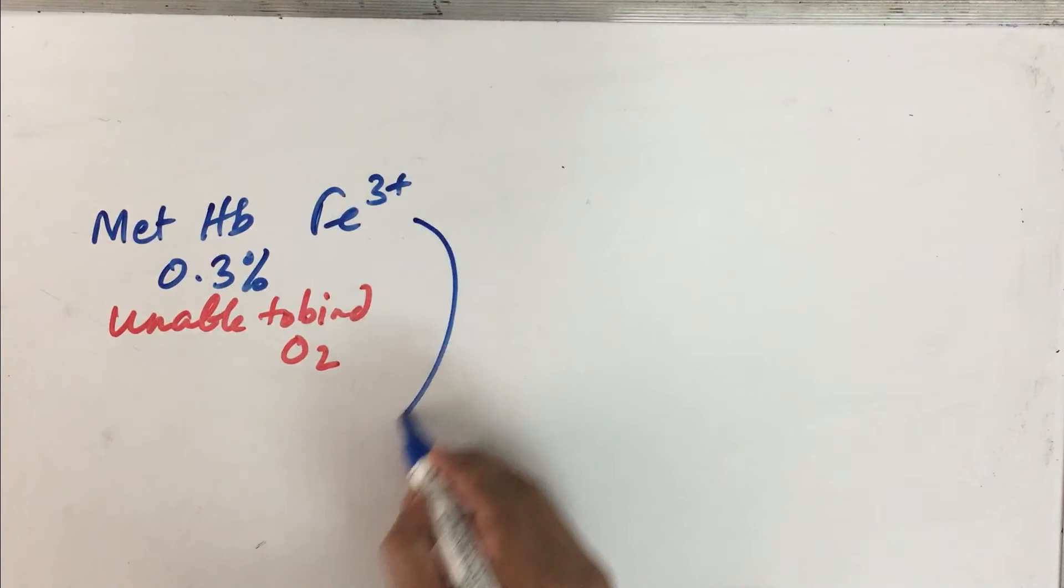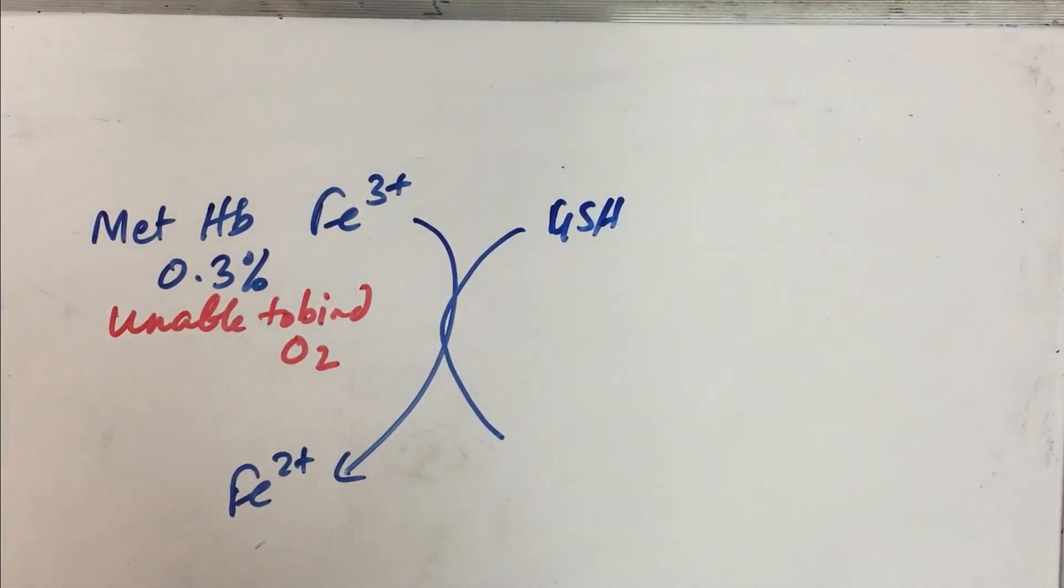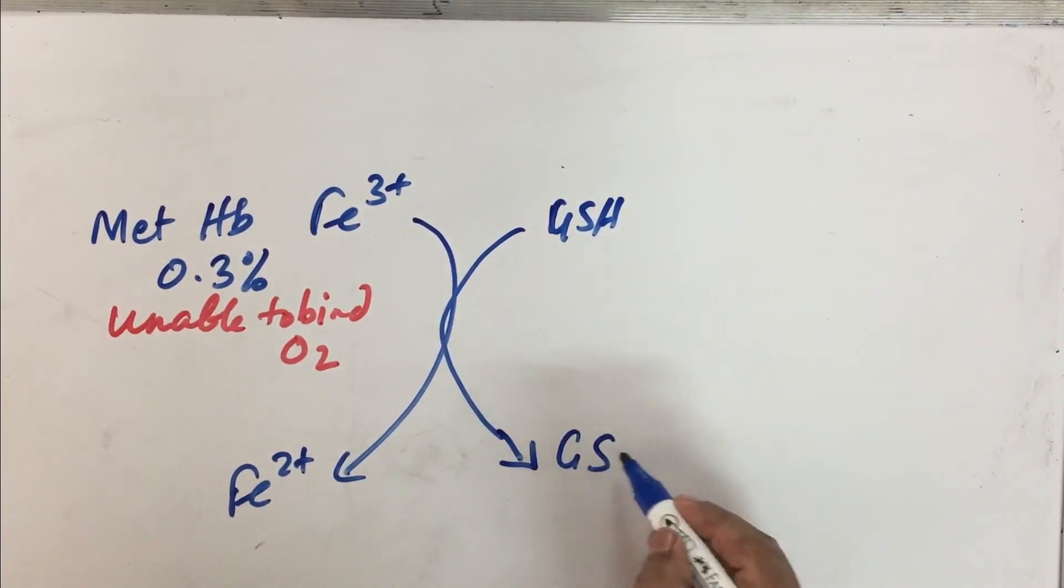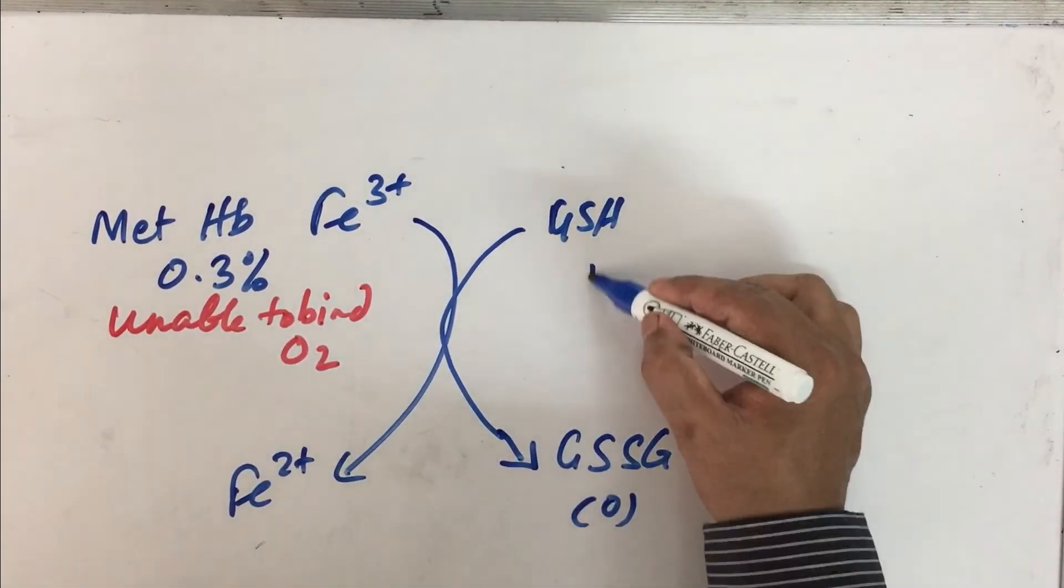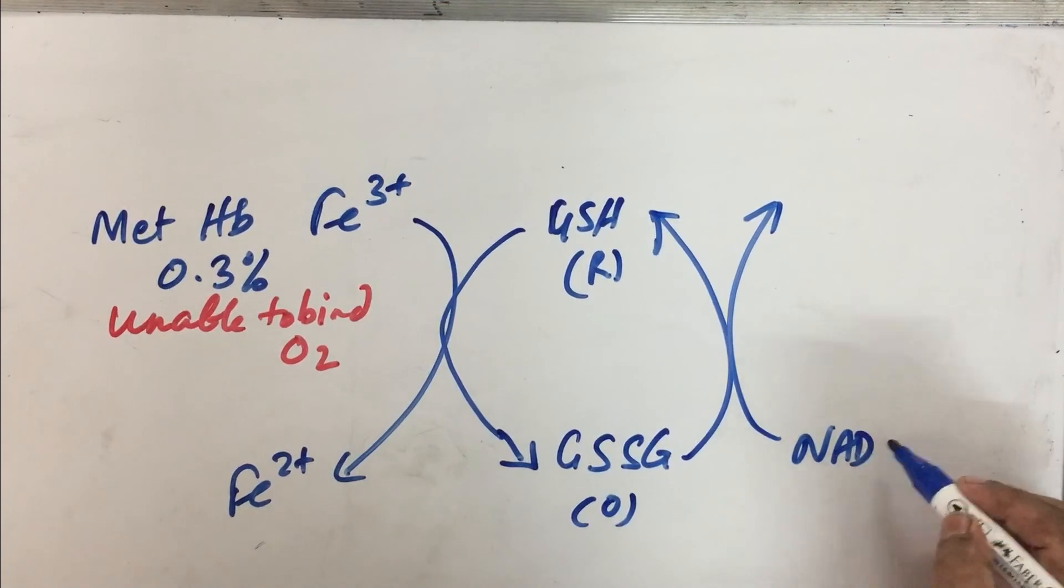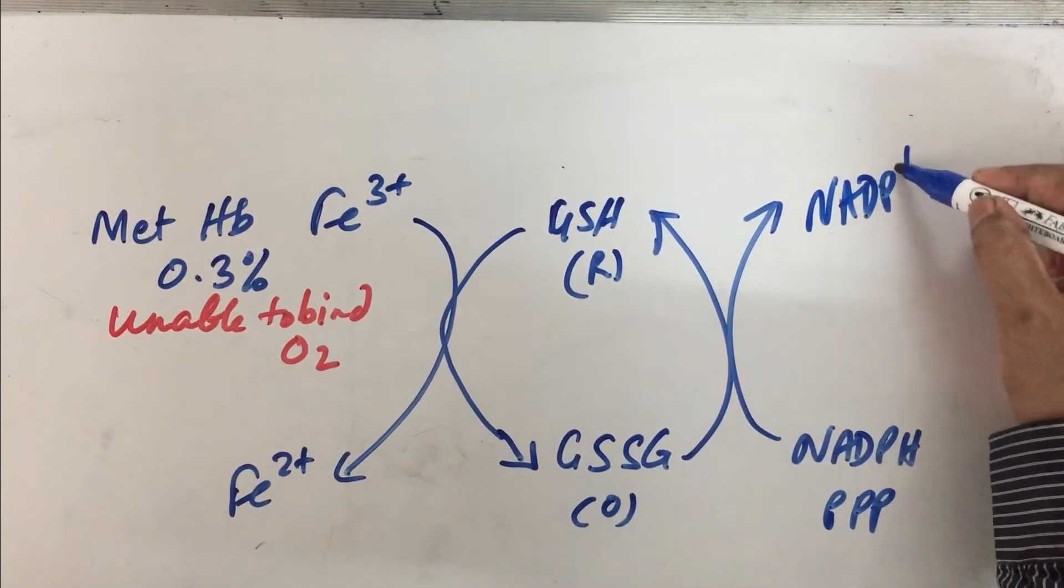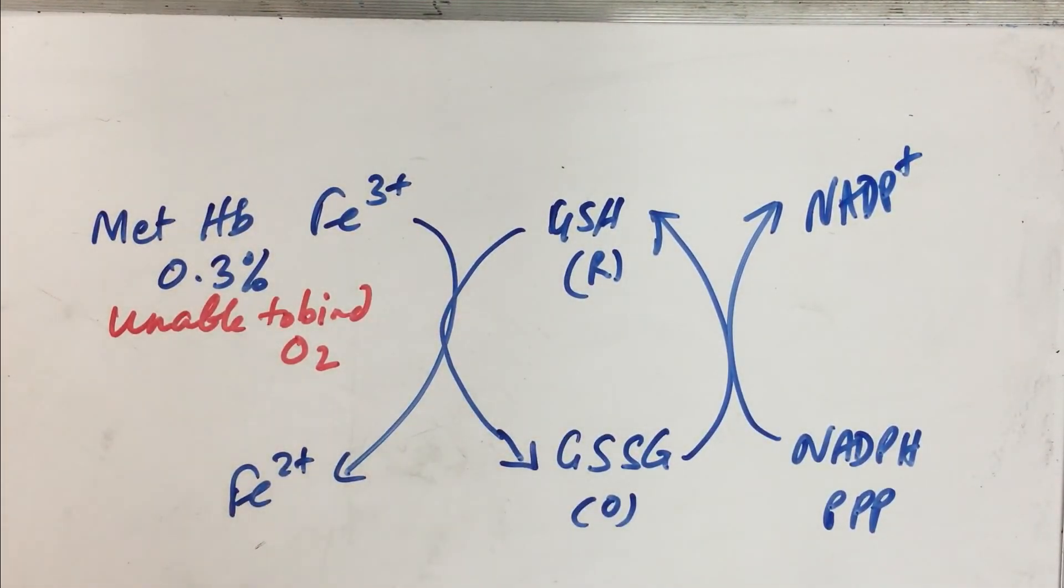There is a need to convert this into normal hemoglobin with Fe2+. For this reduction process, GSH glutathione is provided. GSH will become GSSG, the oxidized form. This is getting converted back with the help of NADPH that is produced through the PPP and it is oxidized to NADP. If the level of methemoglobin is also kept under control by the pentose phosphate pathway.